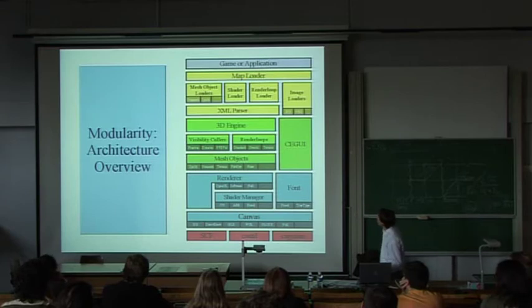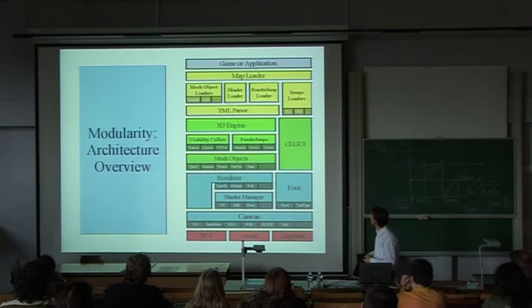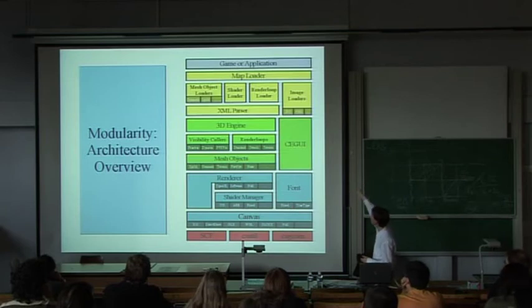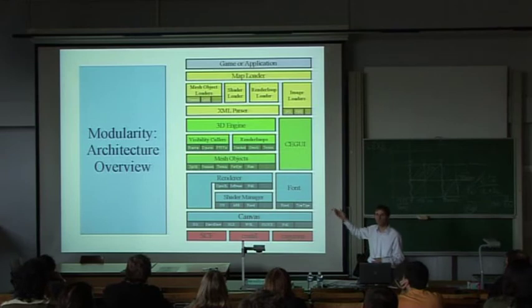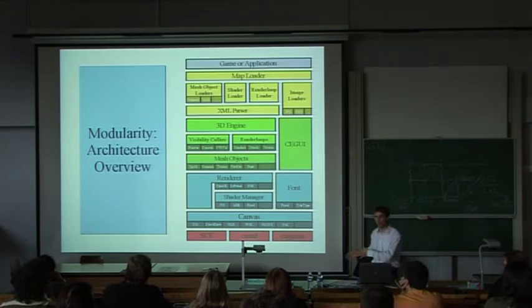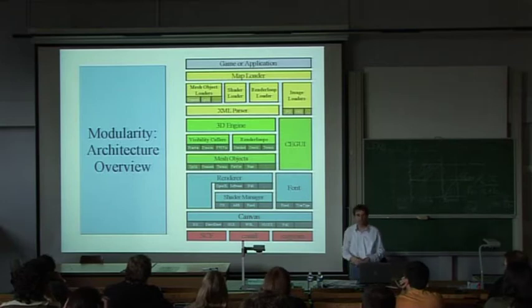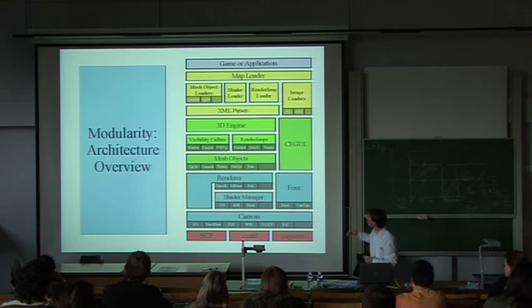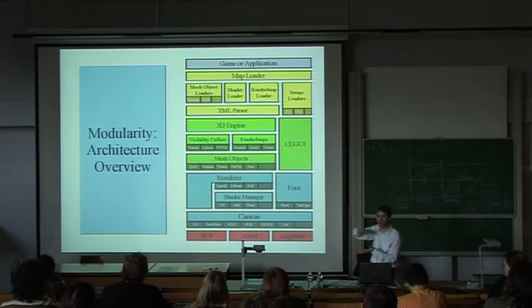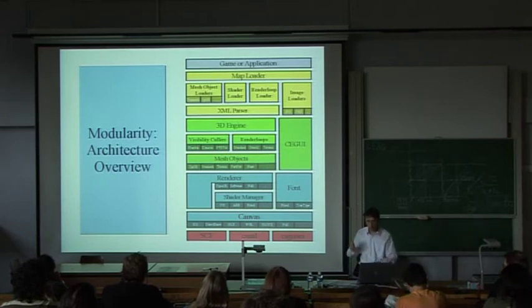The yellow part is everything to do with loading. We use XML a lot — the entire map format is XML. You have the map loader on top, image loaders with different plugins, and for every mesh object type there is a corresponding loader plugin. Some mesh objects also support binary formats, so you can have multiple loader plugins for different formats. Finally, you have the game or the application at the top. At the end of this presentation I'll show another slide which puts this entire block into one called Crystal Space, with Crystal Entity Layer sitting on top.